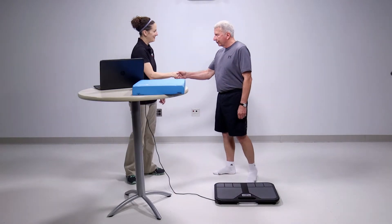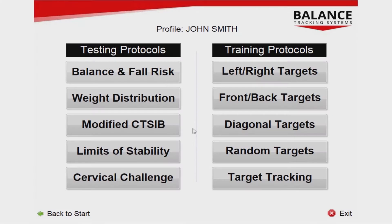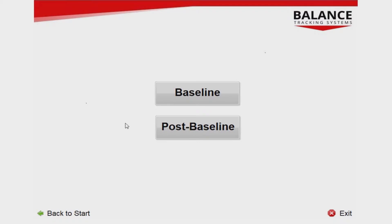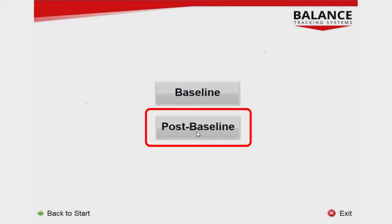This video picks up where the B-Trax Testing Setup video left off. From the Protocol Selection screen, press the Modified CTSIB button to begin. On the following screen, you are given two options. If this is the first test you are conducting on an individual, select Baseline to establish a reference value for all future testing. If this is a follow-up testing session to be compared to baseline results, press Post Baseline.